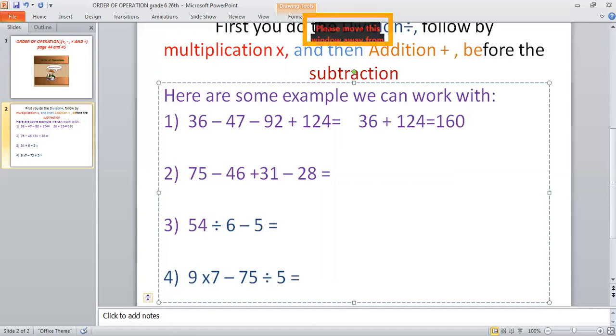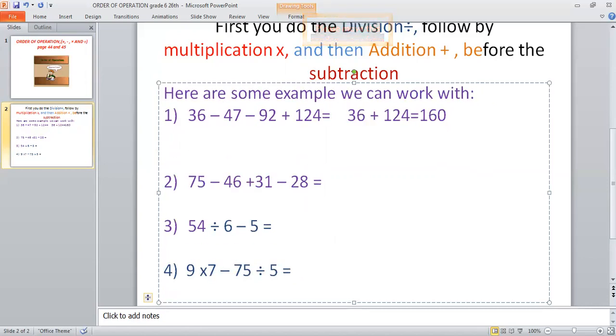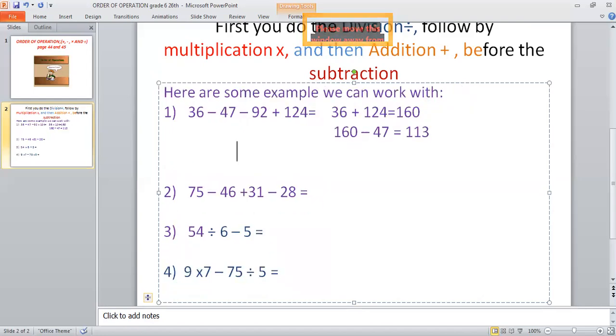So once we get 160, what are we going to do? It means then we're going to minus everything. So we're going to take 160 minus 47, which is going to give you 113. And then you take 113, now we subtract 92. Your final answer is going to be 21.